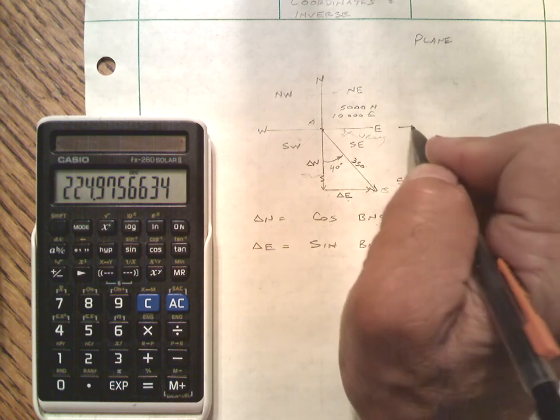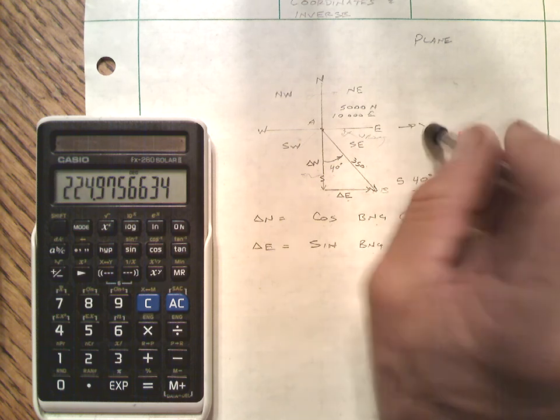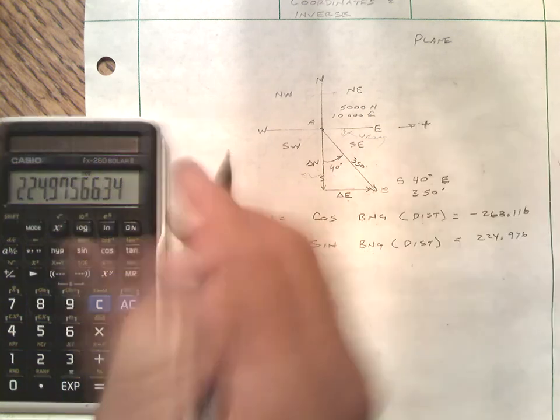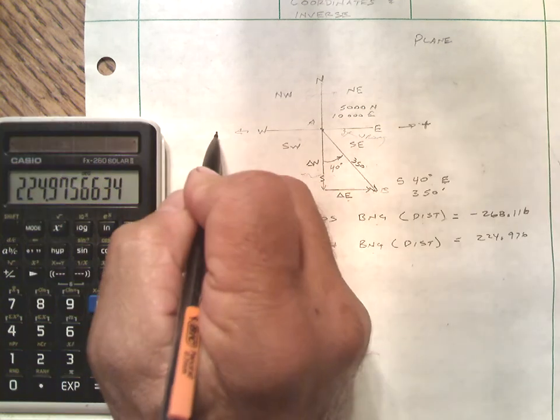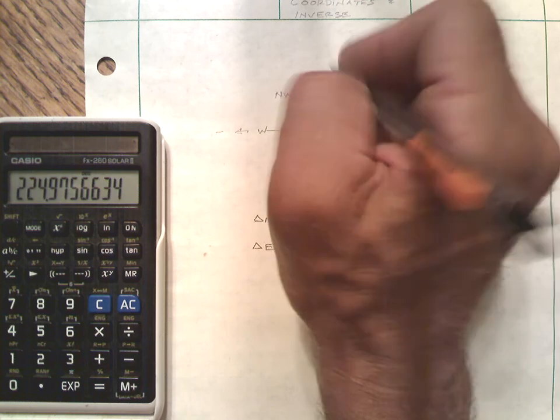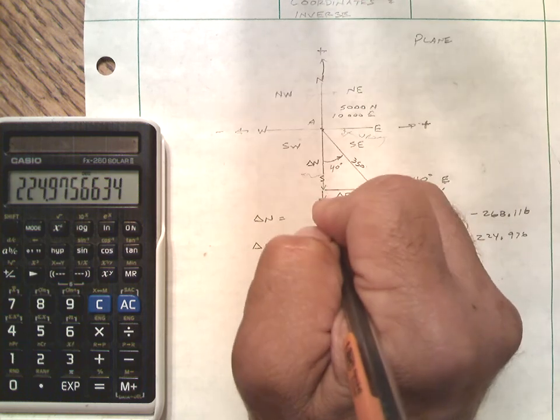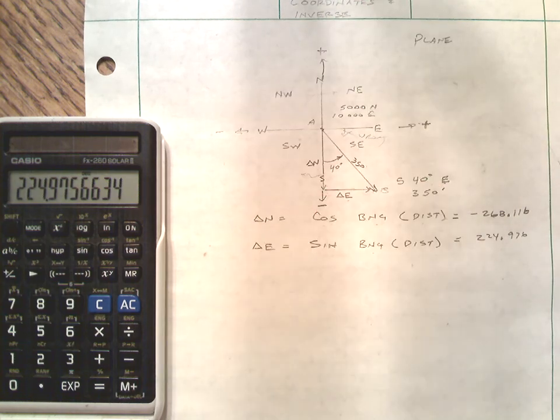So we increase, we increase in the easting positively. Negative in the west, north is positive, south is negative. So you have to think about that as you go.